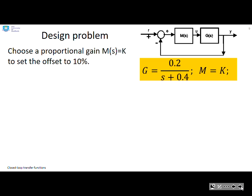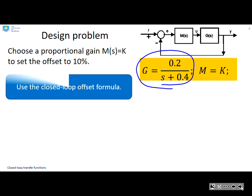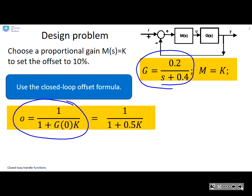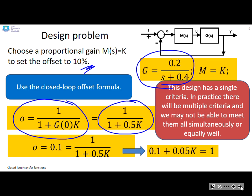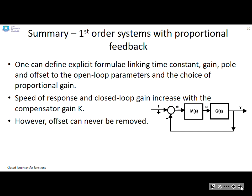Separate design problem: Choose a proportional gain M(s)=K to set the offset to 10%. First, write down the offset formula: 1/(1 + G(0)·K) = 1/(1 + 0.5K), and I want that to be 10%. So 0.1 = 1/(1 + 0.5K), which implies 0.1 + 0.05K = 1, so I can choose K. Again, we reiterate this is a single criteria, so meeting this does not mean you will meet other criteria that are likely to apply.